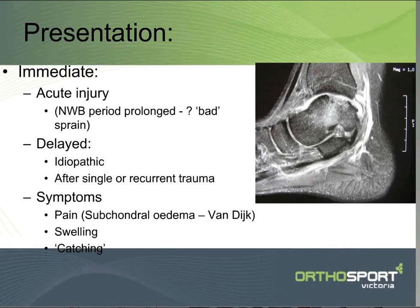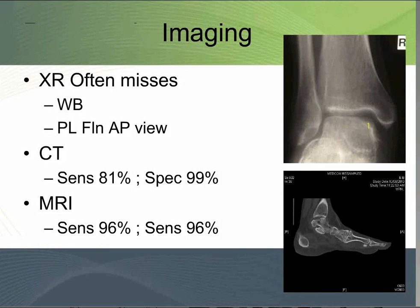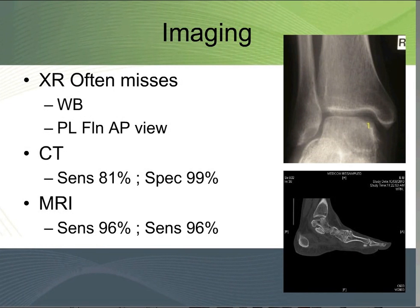They get swelling. And if you get loose flaps or bits of cartilage, they can describe some catching sensations as well. X-rays will often miss things. People talk about plantar flexion AP views just so you can see more of the dome, but unless you bring the dome into direct profile with a little bit of plantar flexion, you can miss it.